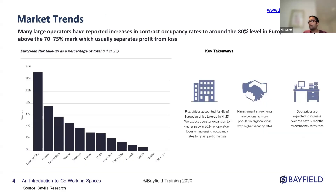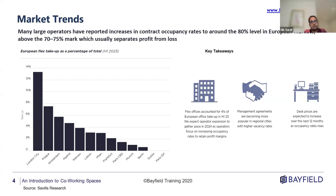On market trends, co-working is doing well. Many large operators have reported 80% occupancy in European markets, which is quite encouraging. Co-working is more popular in urban areas — London, Prague, Amsterdam and other capitals. It's unlikely to work as well in regional locations because the startup ecosystem and freelancing culture are more concentrated in main cities rather than peripheral locations.